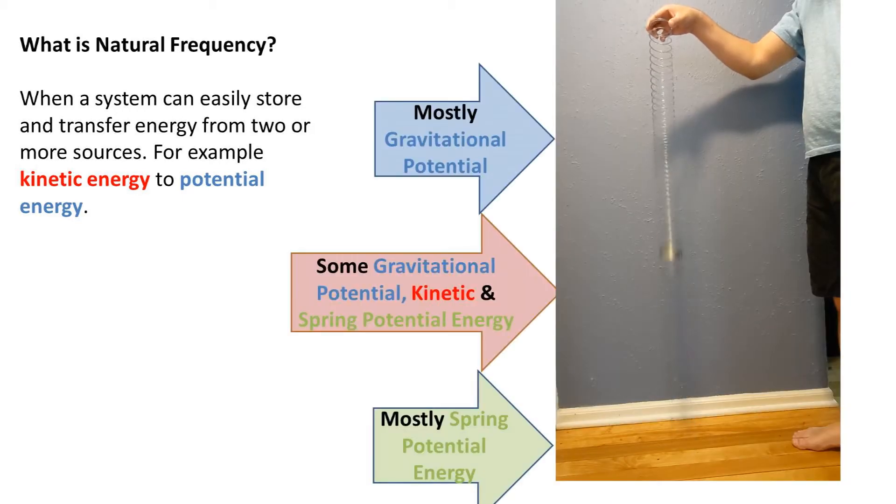Let's look at an example of natural frequency. We have a slinky. The slinky is transferring gravitational potential energy from the raised height to kinetic energy, which then is transferred to spring potential energy. This slinky is left to freely transfer energy from these three different types of energy and goes up and down